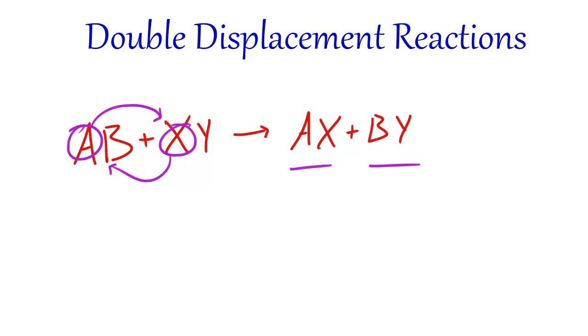Pretty sweet huh? So let's take a look at a real life example. Say we have something like silver nitrate. Now silver nitrate is AgNO3.